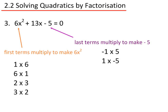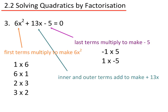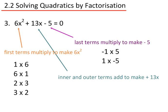The last terms multiply to make minus 5, so I'd need minus 1 and 5, or 1 and minus 5. The inner and outer terms add to make plus 13x. I can do this by trial and error, mentally, but I'm going to list them all here so that you can see the combinations that this gives.